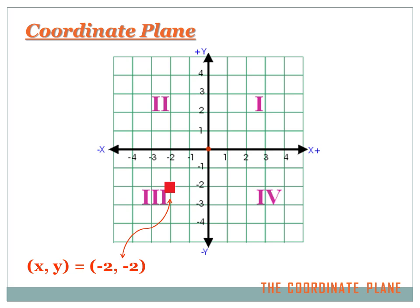By convention, we call the four quarters of the coordinate plane quadrant one, two, three, and four. Quadrant one is in the upper right, quadrant two upper left, three lower left, and four lower right. Each quadrant has certain characteristics. In quadrant one, both x values and y values are positive. In quadrant two, y's are positive but x's are negative. In quadrant three — where our sample point was — we have negative x's and negative y's. And in quadrant four, positive x's and negative y's.